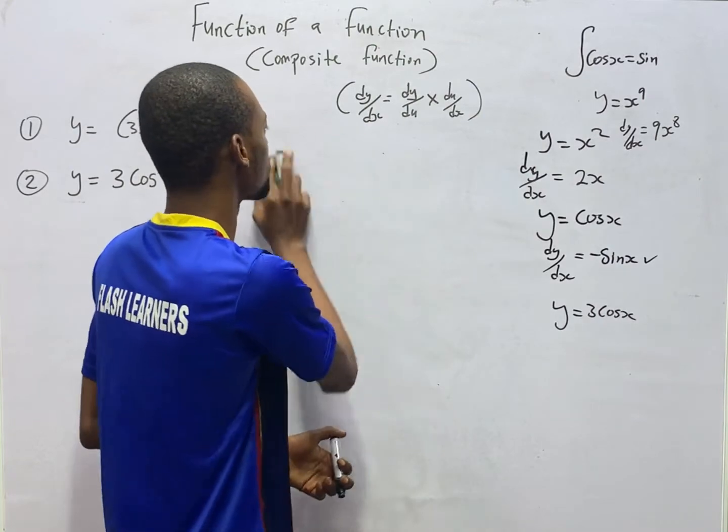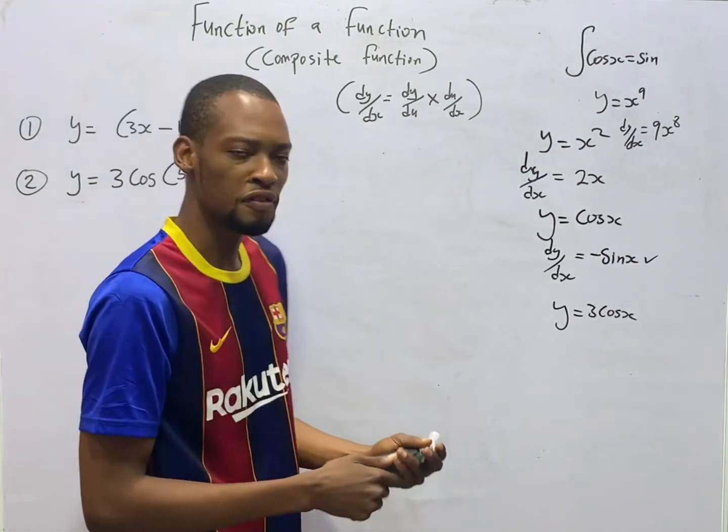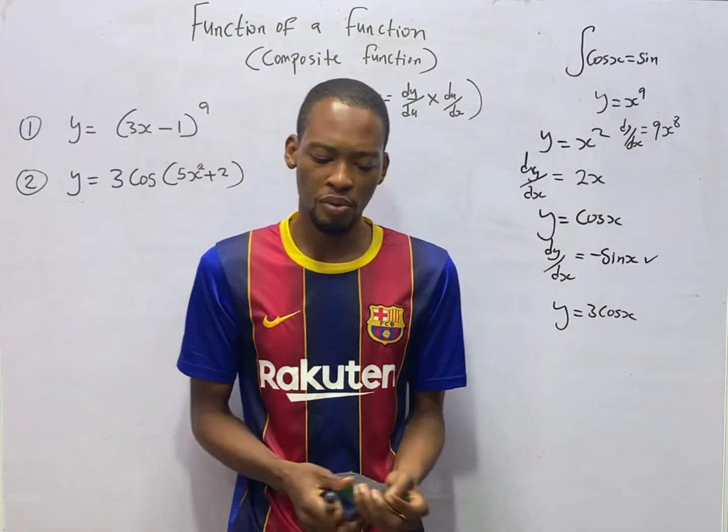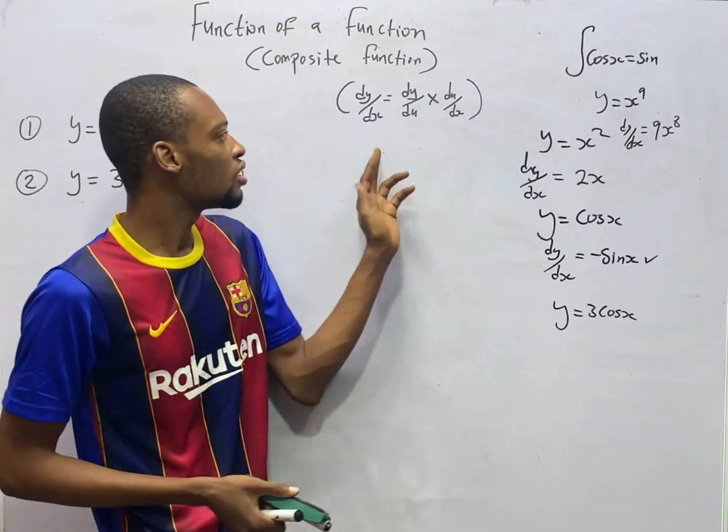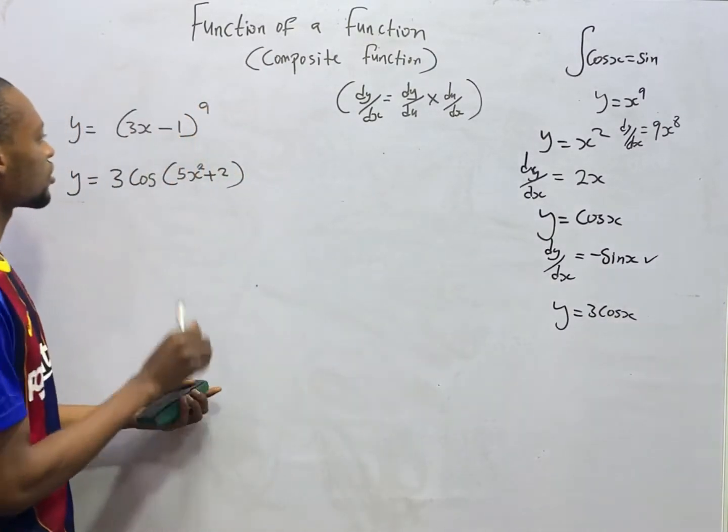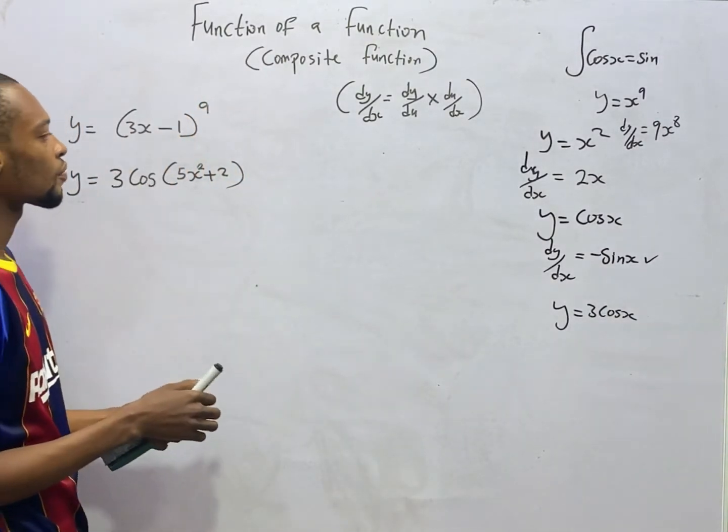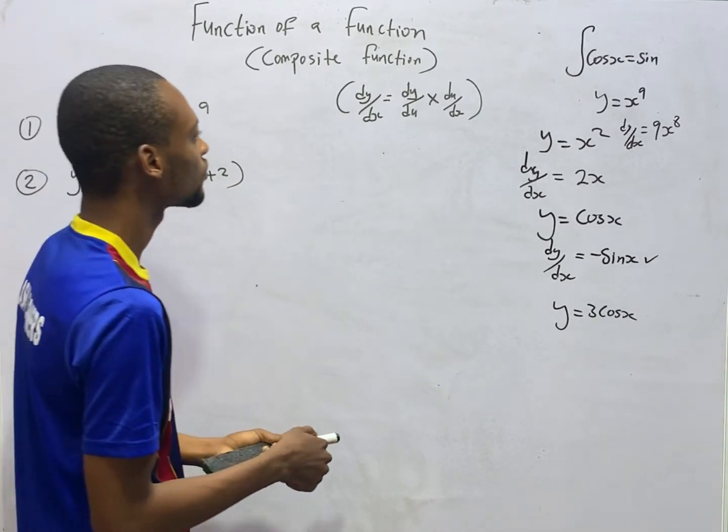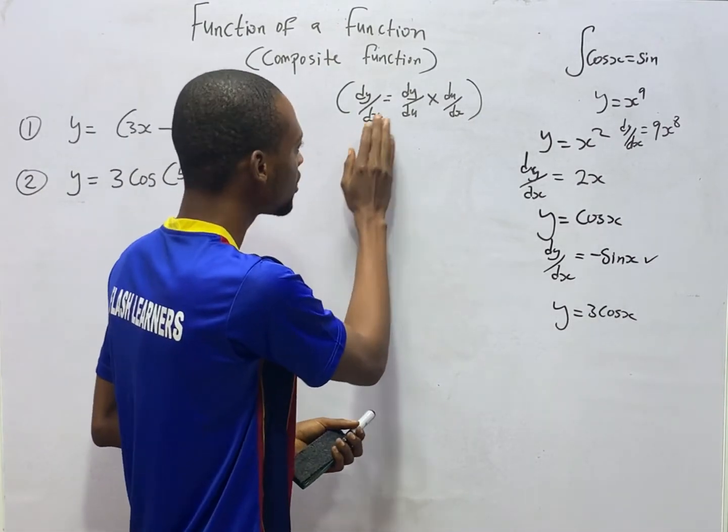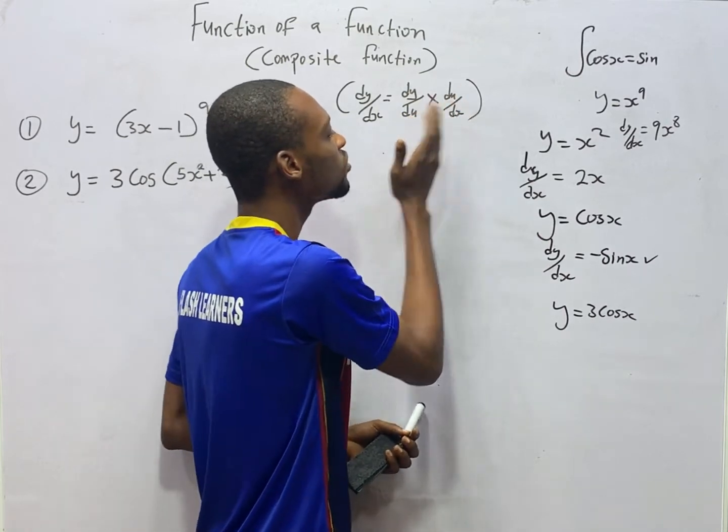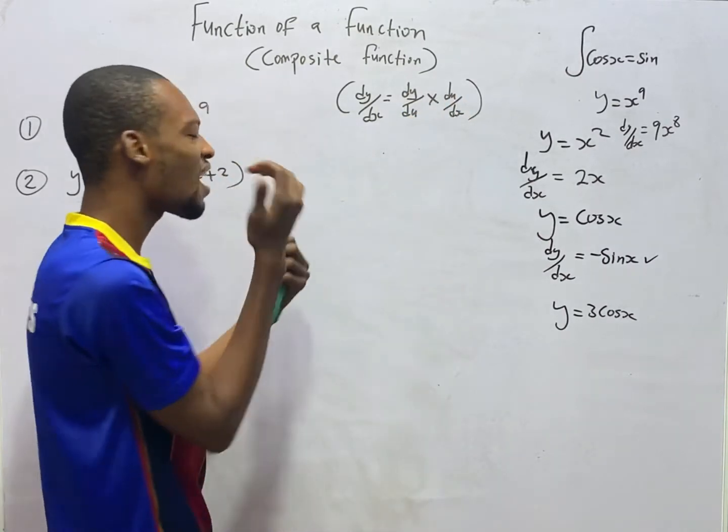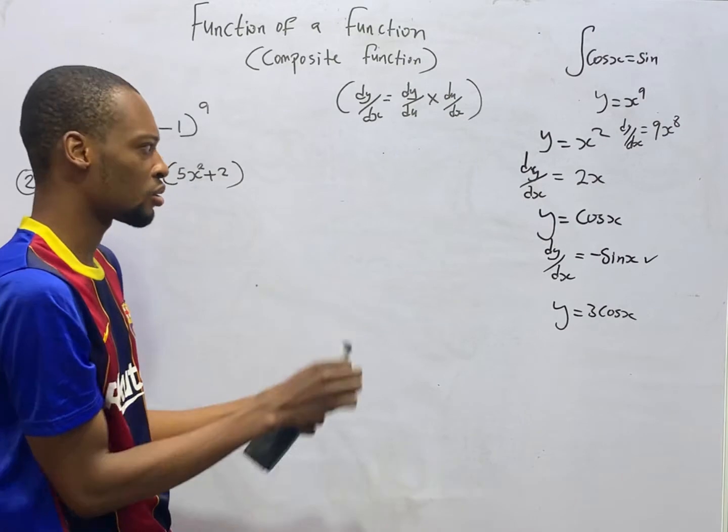So how do we solve problems on that function of a function? It is simple. This is the rule. When you are given function of a function, the rule is: dy/dx equals dy/du times du/dx.